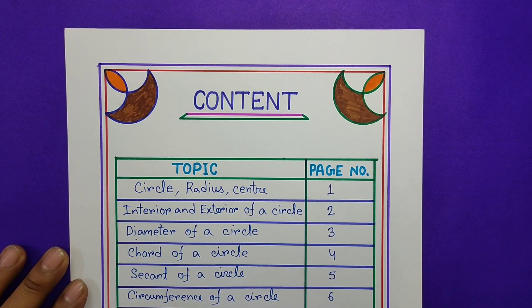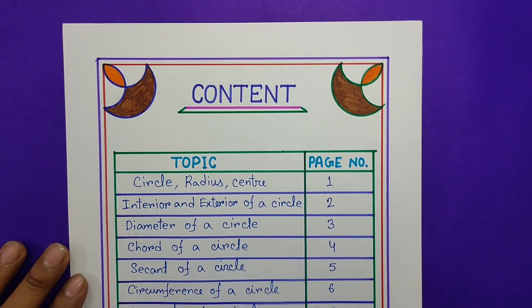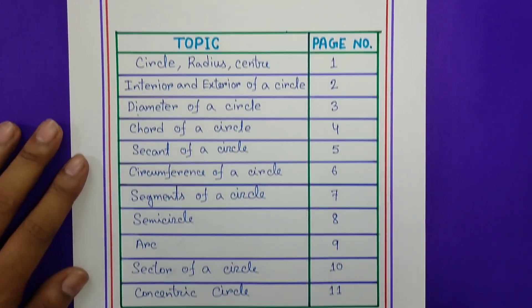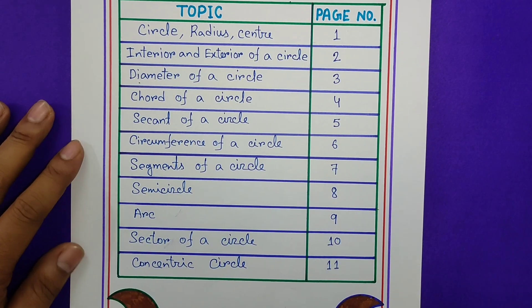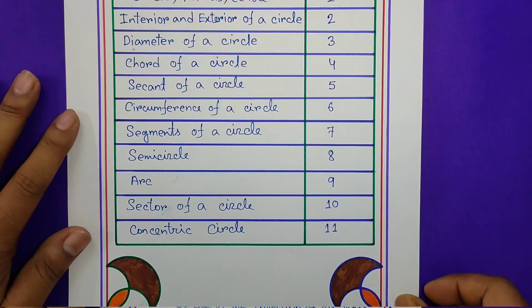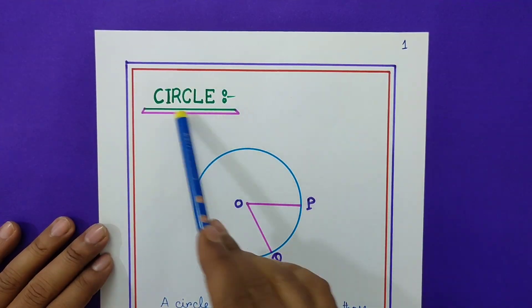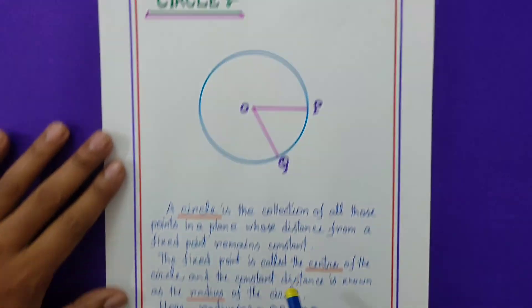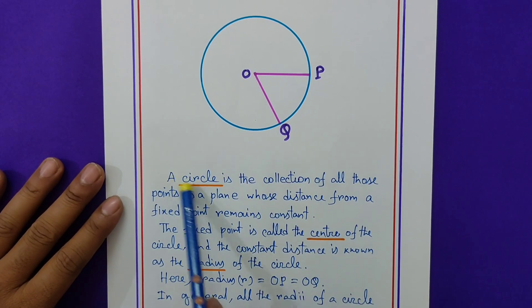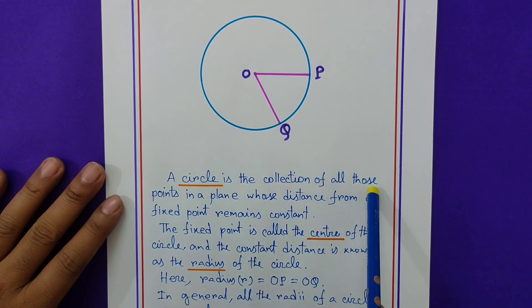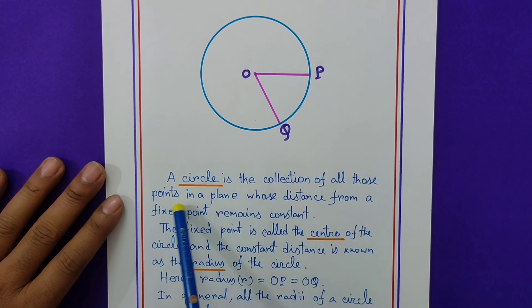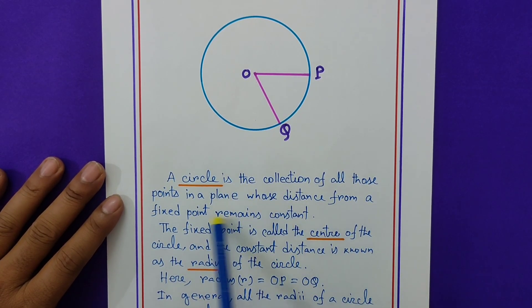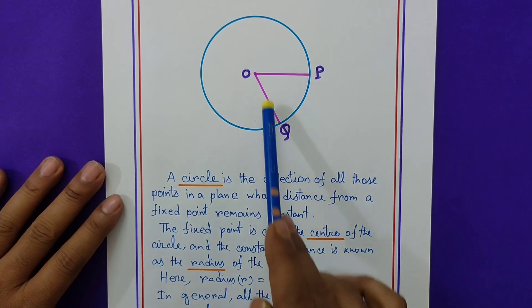You can see this is the content of this project. Page number 1: circle. A circle is the collection of all those points in a plane whose distance from a fixed point remains constant.